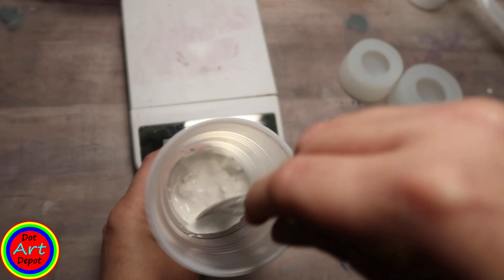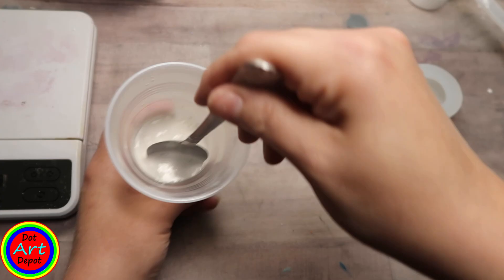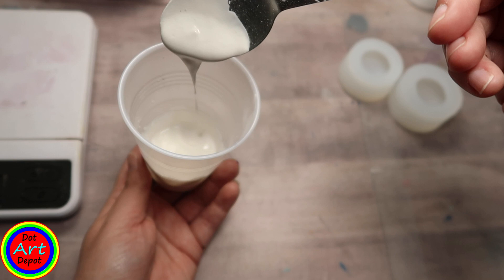Make sure that you get any of the little pockets of dry powder that may be along the edges of your cup. You're looking for a consistency something like batter.